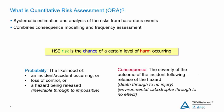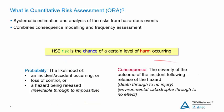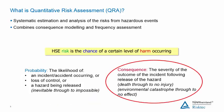Let's break down and define the terms further. Probability can be defined as either the likelihood of an accident or incident occurring — a loss of control or a hazard being released. The event probability can range from certain through to impossible. Consequence can be defined as the severity of the outcome of the incident following the release of a hazard — from death through to no injury or harm to a person.